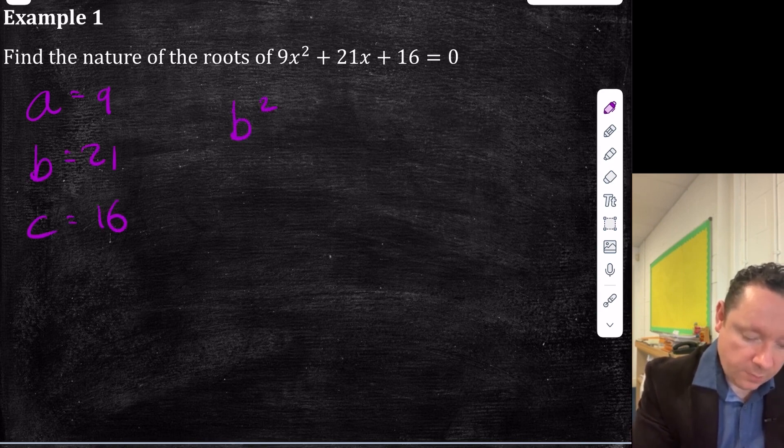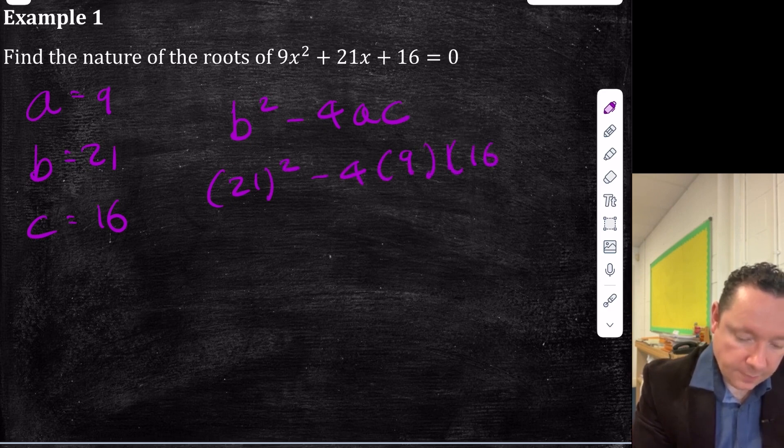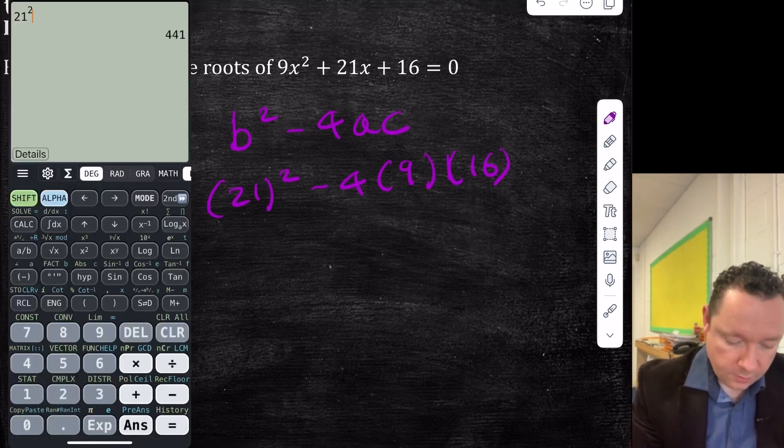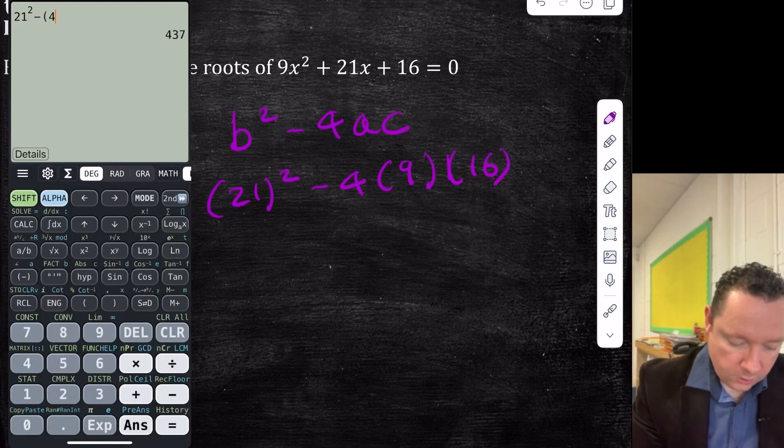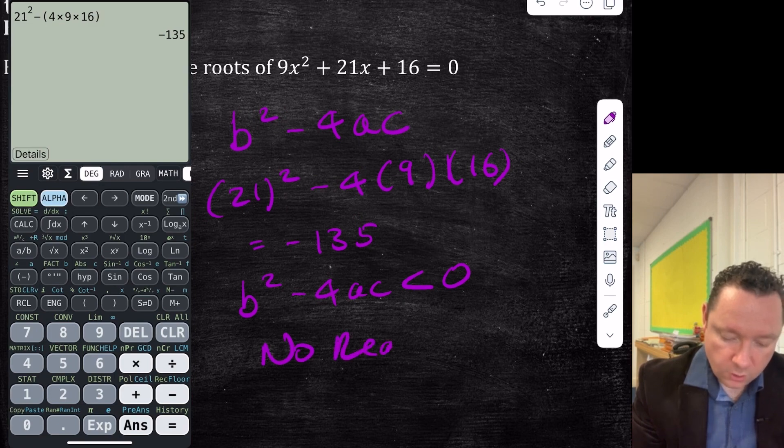b squared minus 4ac. So that's 21 squared minus 4 times 9 times 16. Getting a calculator for that then. 21 squared minus 4 times 9 times 16 is minus 135. So since b squared minus 4ac is less than zero, no real roots. And we're done there.